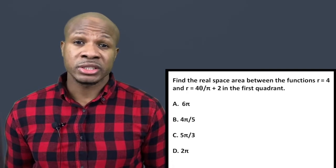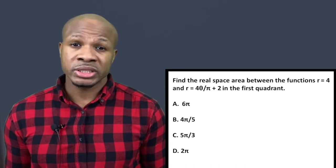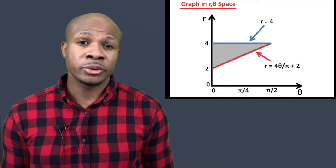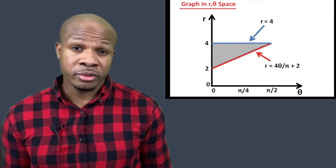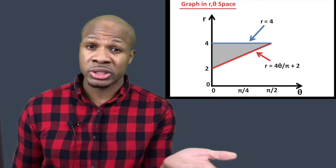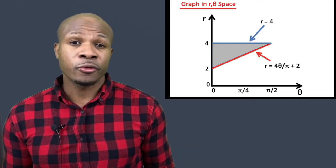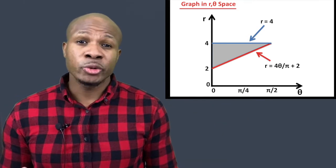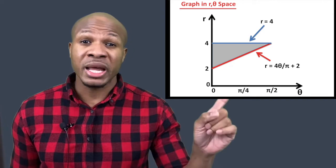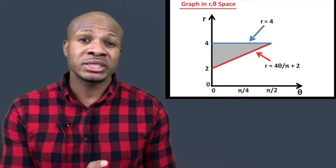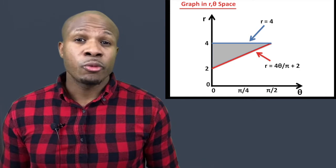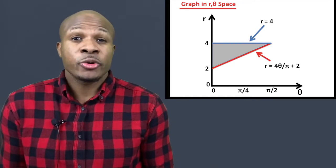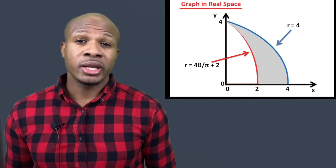To convince yourself, plot these two equations in r-theta space. The region is very simple: r = 4 is just a horizontal line, and r = 4θ/π + 2 is a linear equation — a straight line. The boundary between the horizontal line and the sloped line forms a triangle in r-theta space. We want to find the area of this region in real space.